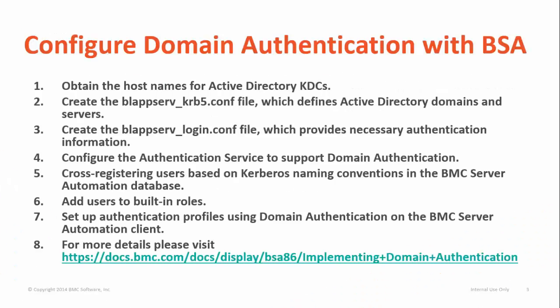Let me first walk you through the seven steps required to configure domain authentication. In the first step, the end user should know the name of the domain he or she wishes to log on to. This information along with the domain name will be populated into the blappserver-krb5.conf file, which is used by the application server to talk to the Active Directory. The third step is the blappserver-locking.conf file, which basically tells the application server the type of authentication that has to be enabled. This file is a standard file and should not be modified by end users. A copy of this file can be downloaded from docs.bmc.com and be directly used by end users. Once you have the two files ready, you can now log on to the application server and start configuring it so that the authentication service also enables domain authentication.